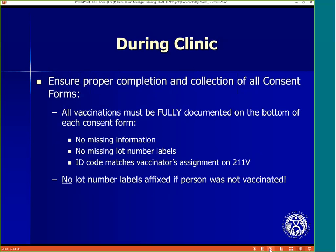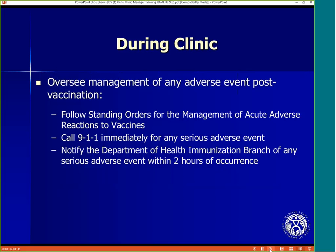The clinic manager must ensure proper completion and collection of all consent forms. All vaccinations must be fully documented on the bottom of each consent form — no missing information, no missing lot number labels, and the ID code must match the vaccinator's assignment on the 211B. Remember, no lot number labels are affixed if the person was not vaccinated. The clinic manager will oversee the management of any adverse event post-vaccination. Follow the standing orders for the management of acute adverse reactions to vaccines. Call 911 immediately for any serious adverse event. Notify the Department of Health Immunization Branch of any serious adverse event within two hours of occurrence.